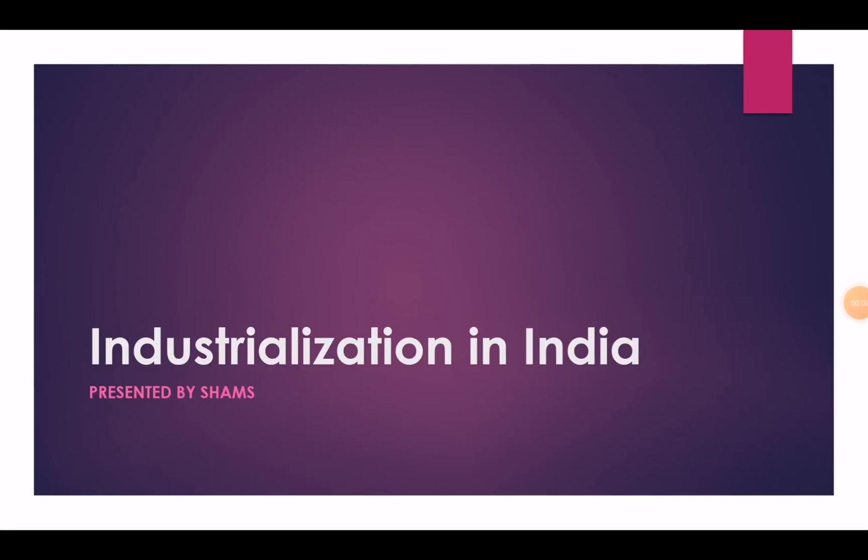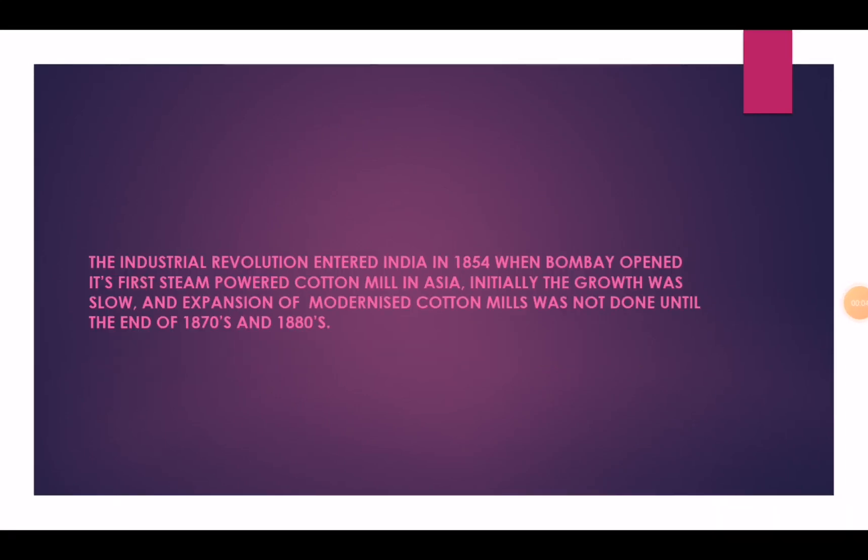Industrialization in India. The Industrial Revolution entered India in 1854 when Bombay opened its first steam-powered cotton mill in Asia. Initially, the growth was slow and expansion of modernized cotton mills was not done until the end of the 1870s and 1880s.